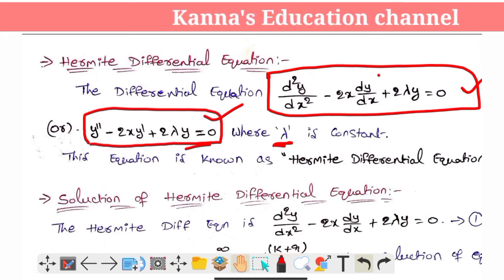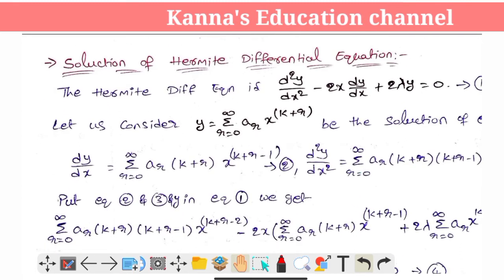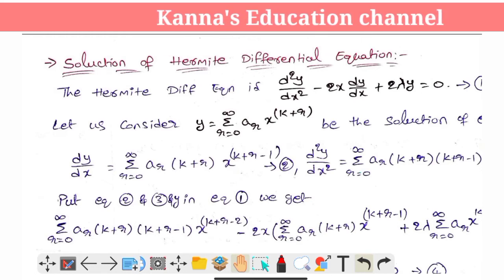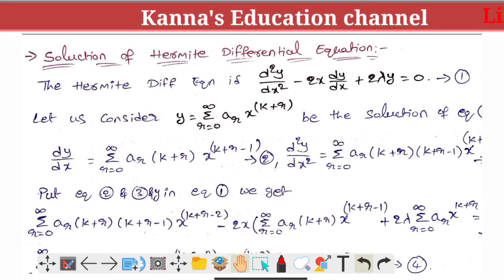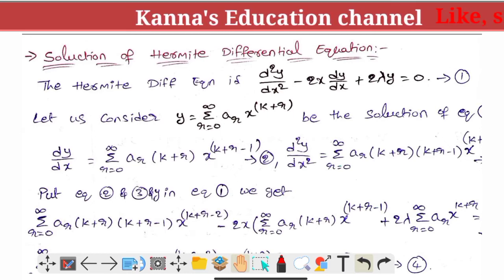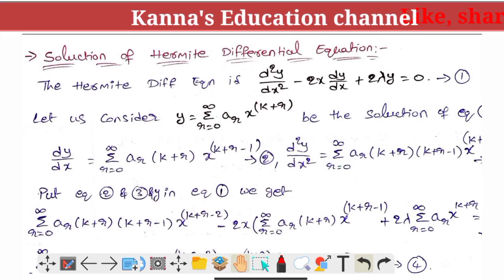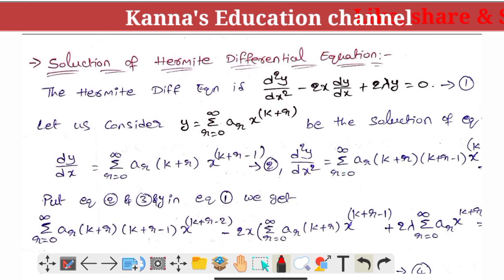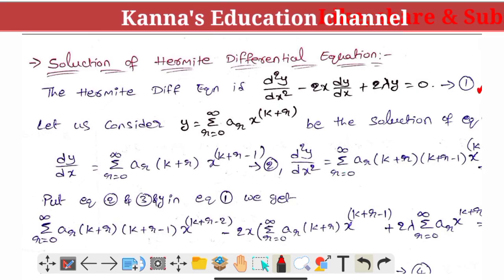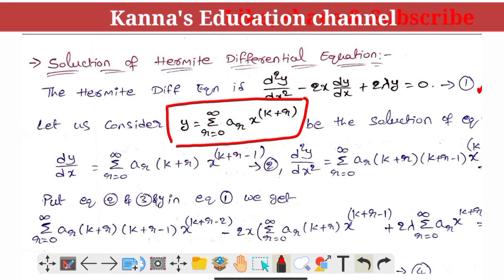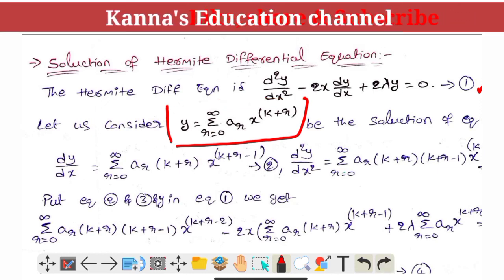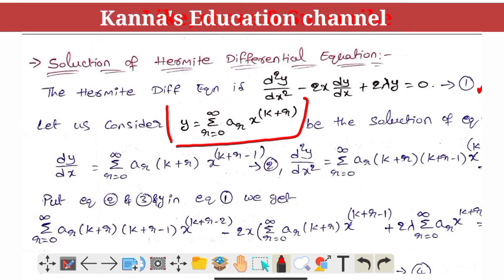The solution of the Hermite differential equation — we need to find out the solution. We have a solution for n. In the y place, y is equal to the summation of r equals 0 to infinity of e_r into x to the power k plus r. This is equation 1.